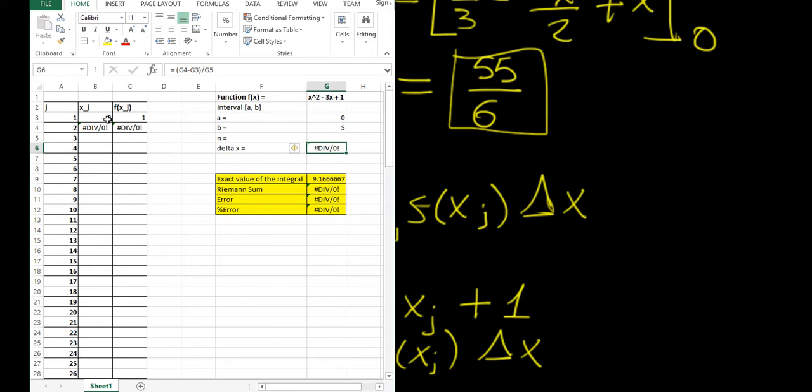On this column we're going to have all our values xj. That's going to depend on our initial value which is a, so this cell is set to equal this cell. This cell here is going to be the previous cell plus Δx.